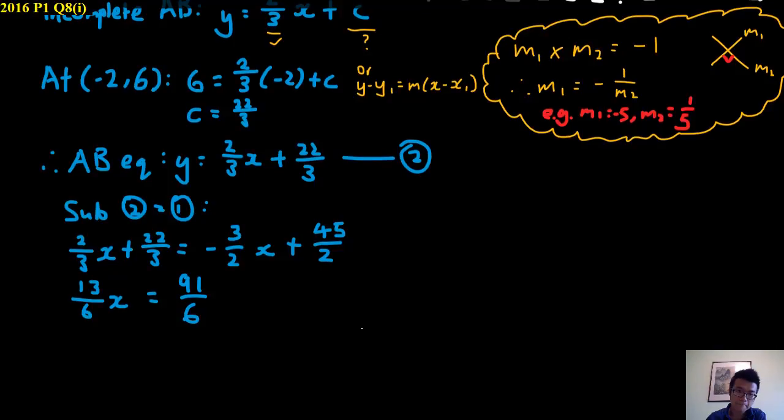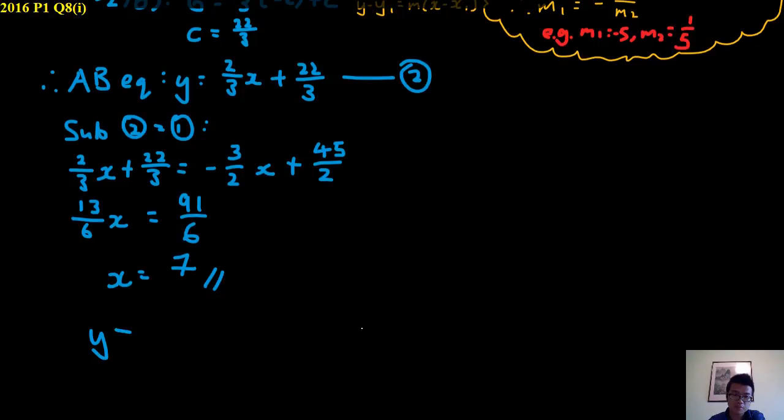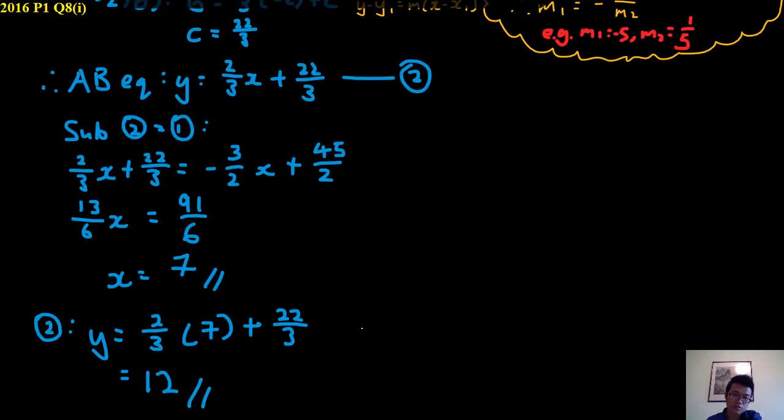And lastly, you get your answer, x equals to 7. If you want the full answer, you must find your y coordinate as well. So just sub it in to equation 2 to get 12. So these 2 are your answer for 8 part 1.